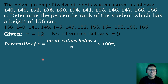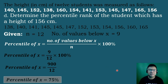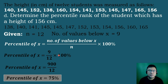We use the formula: percentile rank of x equals the number of values below x divided by n, times 100%. So we have 9 over 12 times 100%, which gives 900 over 12, equals 75%. Therefore, 75% of the students have a height less than or equal to 156 cm, or equivalently, 25% of the students have a height greater than or equal to 156 cm.